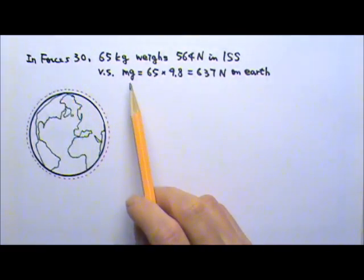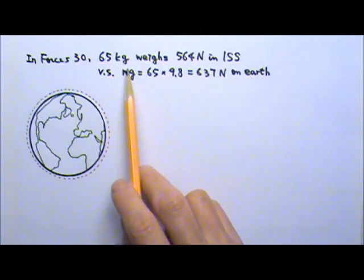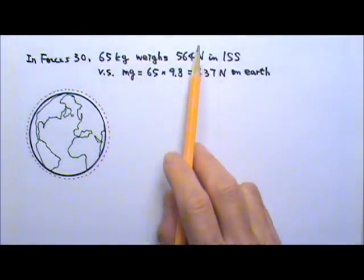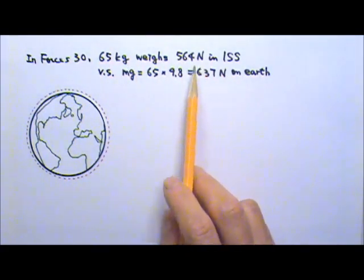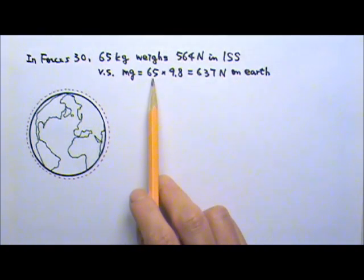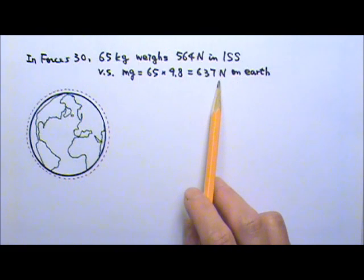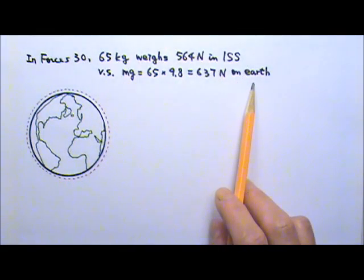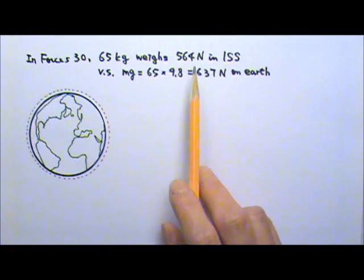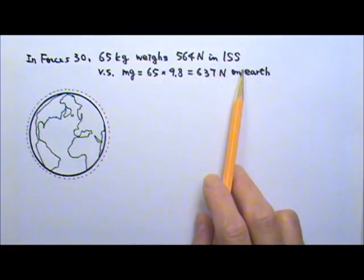We found that the weight of a 65 kilogram astronaut is 564 newtons, not much less than mg = 65 × 9.8 = 637 newtons on the surface of the Earth, which means the astronauts are not really weightless at all in the space station.